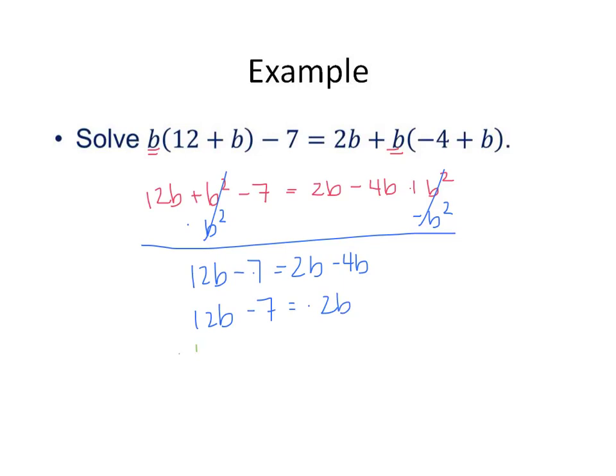We've combined like terms. I would get the b's on the same side. This is just like solving any other equation. And we're going to divide by negative 14 to get b by itself. We're going to leave this as a fraction and reduce it. B equals 1 half. And you should be able to put b back into the original problem and check to show that gives you a true statement.